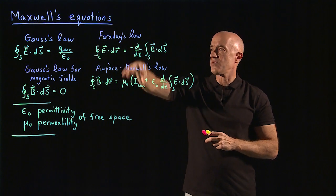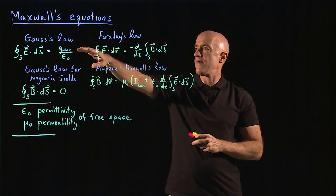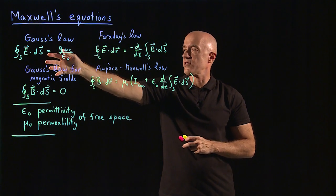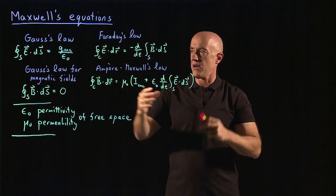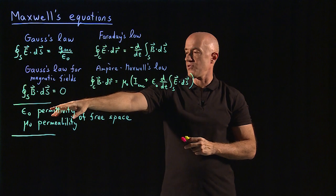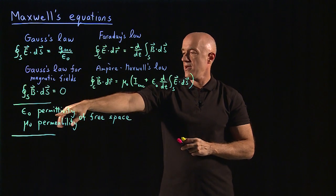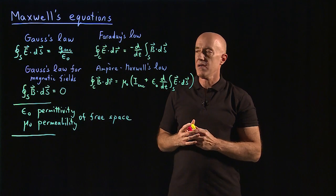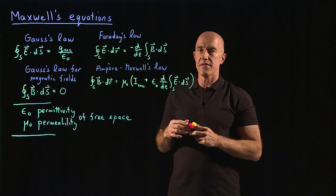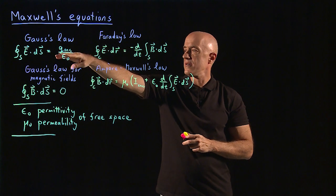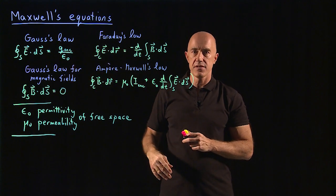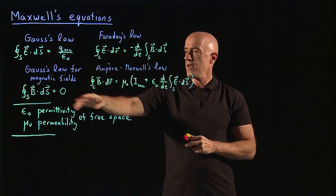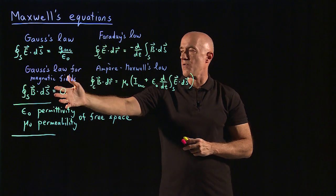So we have four of Maxwell's equations in integral form. We have Gauss's law, which tells you that the surface integral of the electric field is equal to the charge enclosed. Epsilon nought is the permittivity of free space, and mu nought is the permeability of free space. These show up in the SI unit system that engineers typically use. Then we have Gauss's law for magnetic fields, which is the same as Gauss's law for the electric field except the right-hand side is zero. That law states that there are no magnetic monopoles.